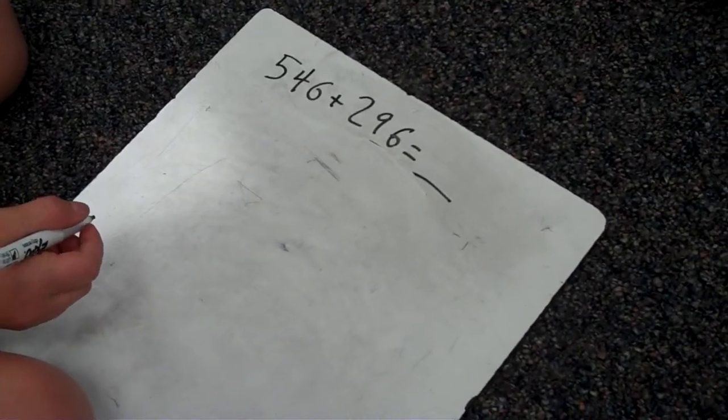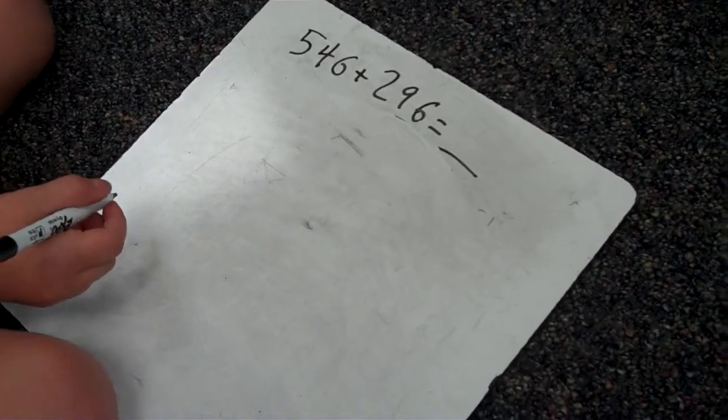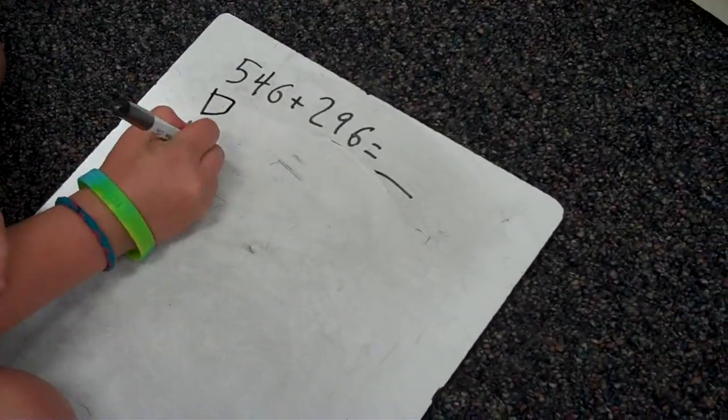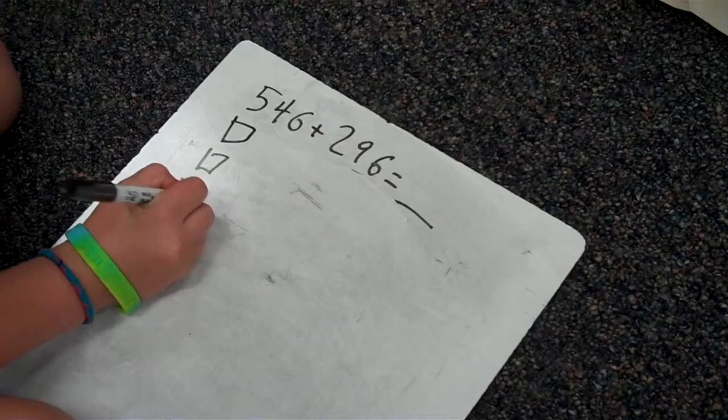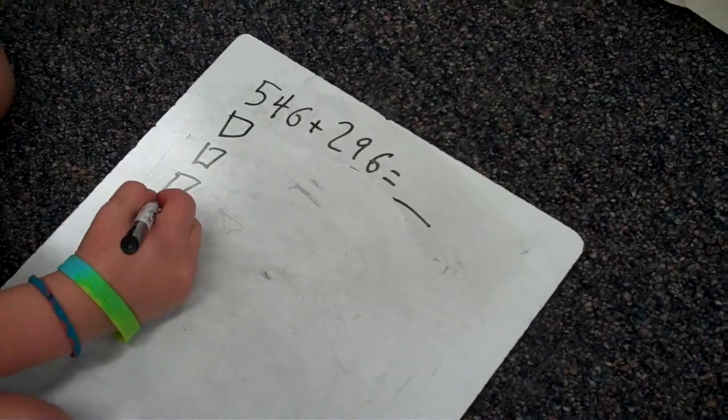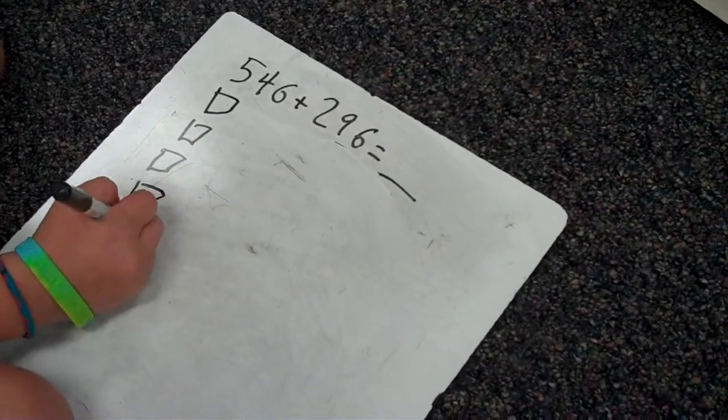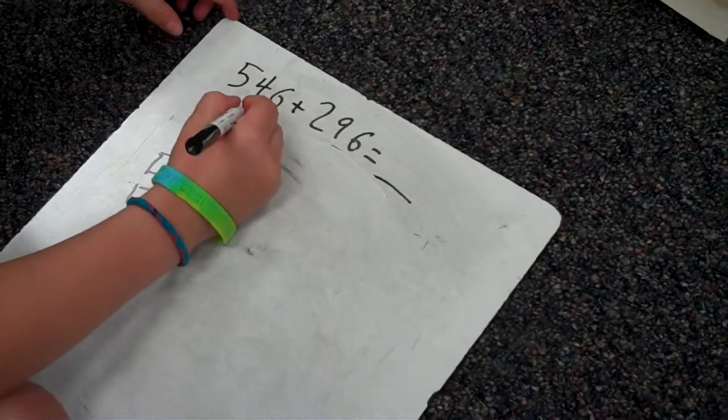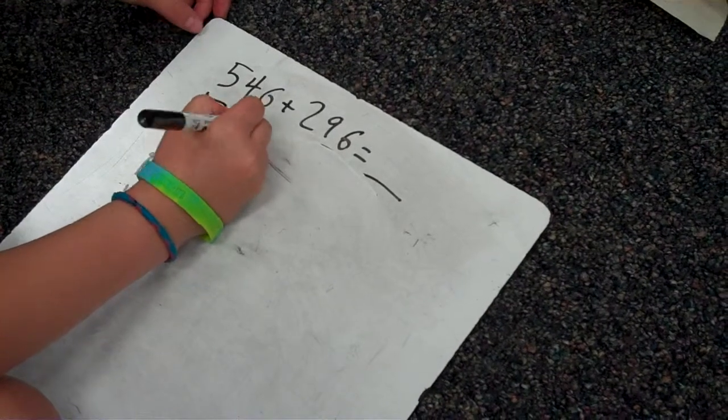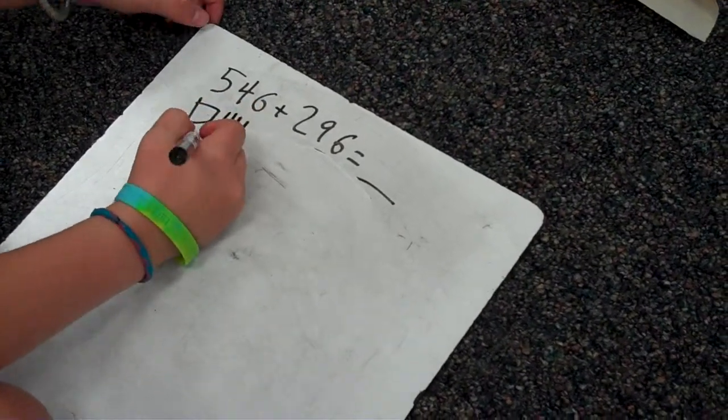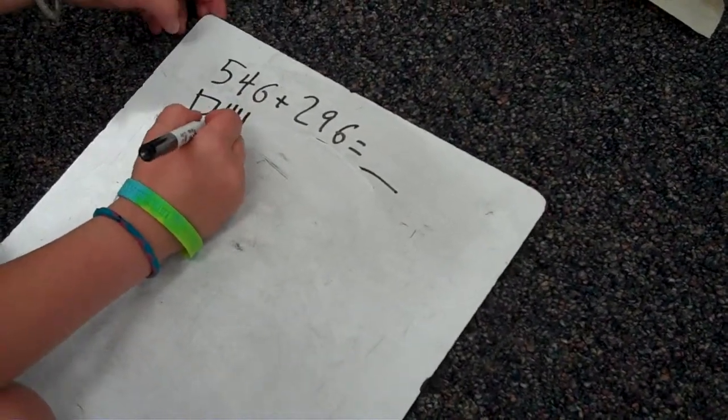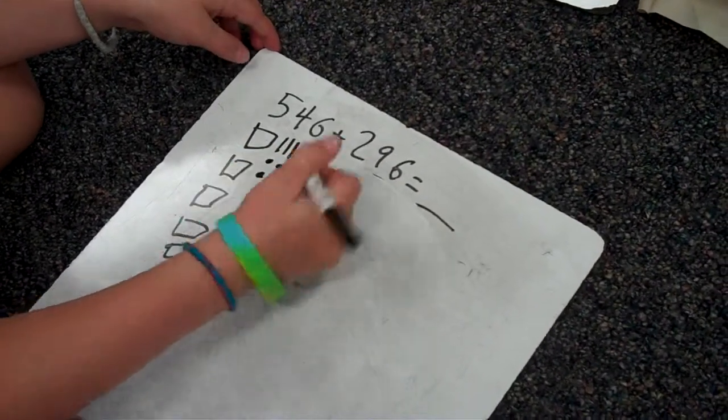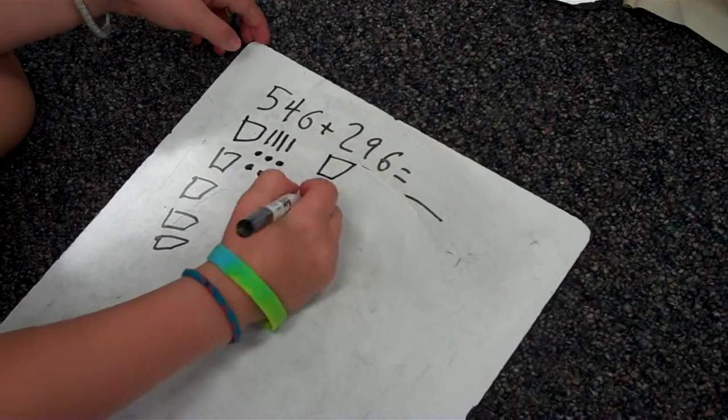Do you think you could solve this three-digit equation? Yeah. Okay, go for it. So first you put five squares for 500, and then you put four straight lines for the 10 column, and then you put six dots for the ones. And you do the same for the other.